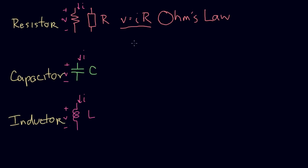Now for the IV relationship for the capacitor. The capacitor has the property that the current through the capacitor is proportional to the rate of change of the voltage — not to the voltage itself, but to the rate of change of the voltage. We write that as: current equals C times dV/dt. C is the proportionality constant called the capacitance, and dV/dt is the rate of change of voltage with respect to time. I'll refer to this as the capacitor equation.